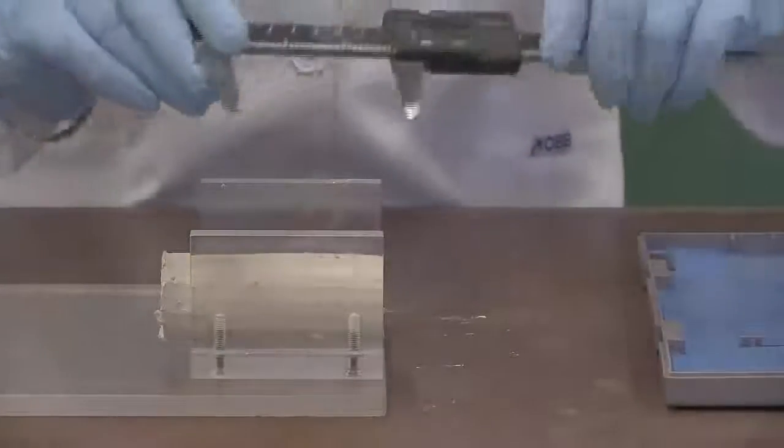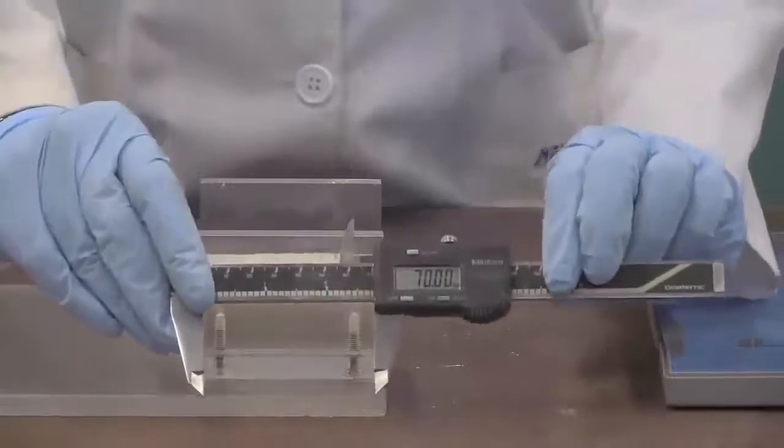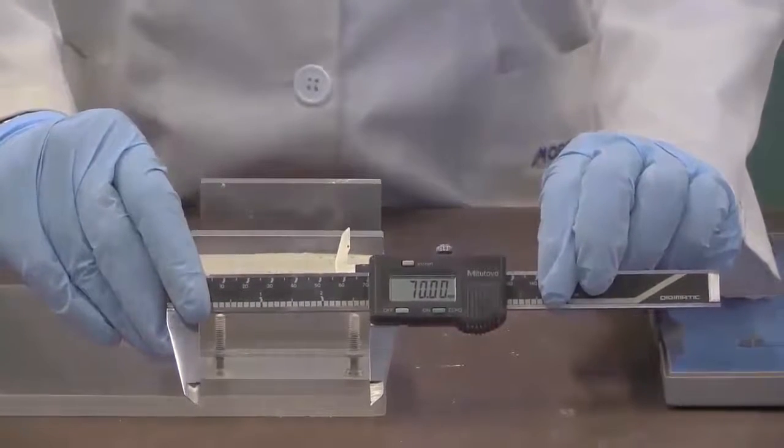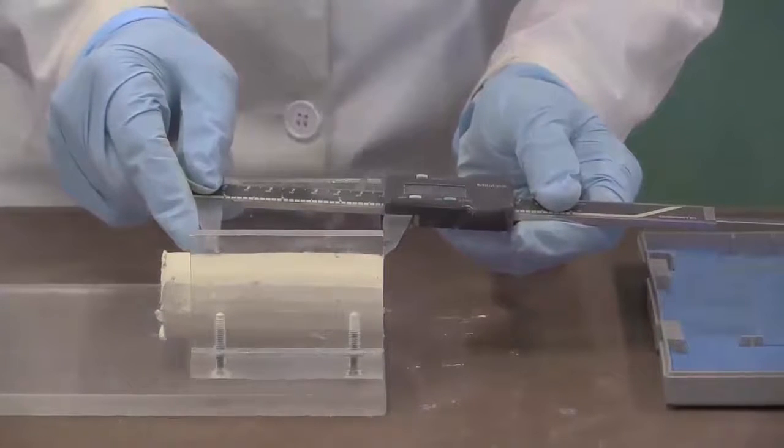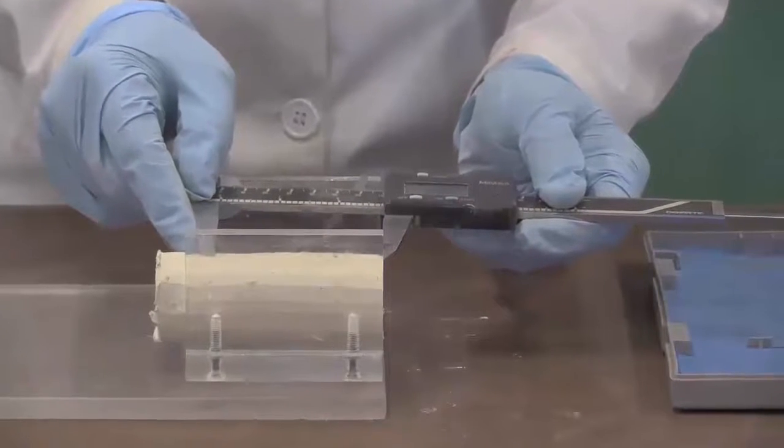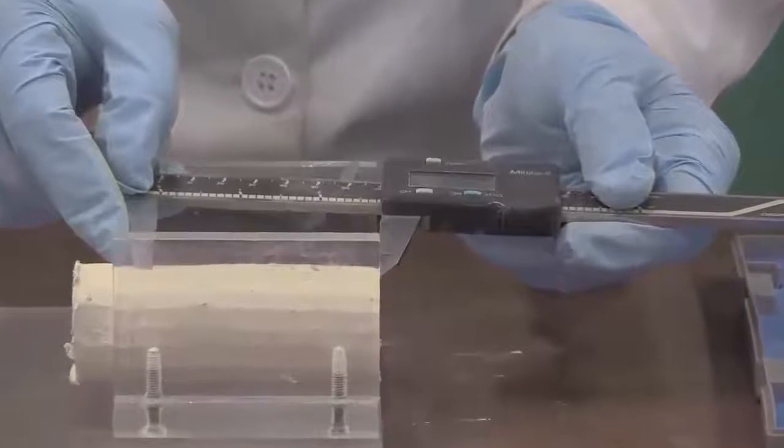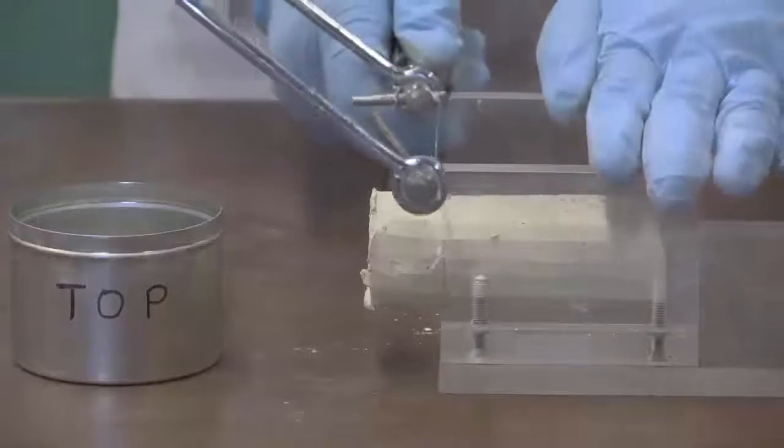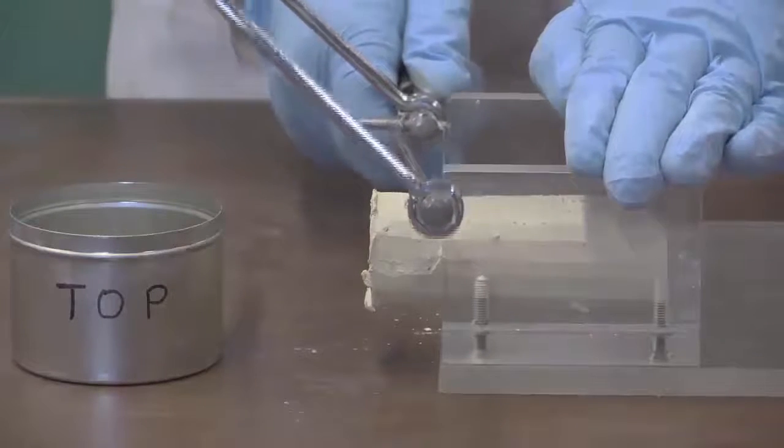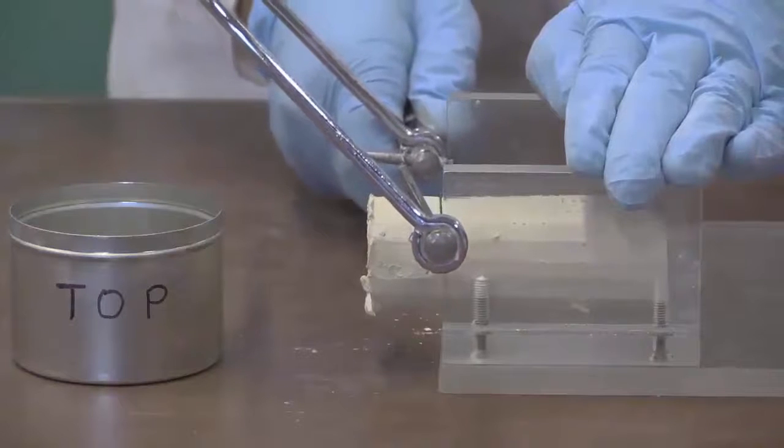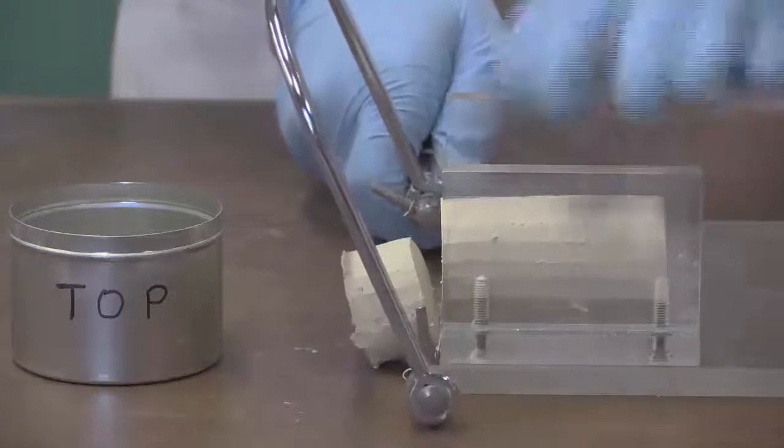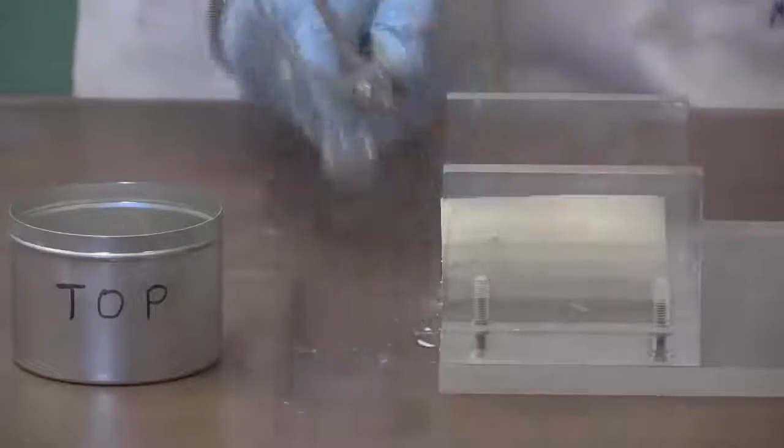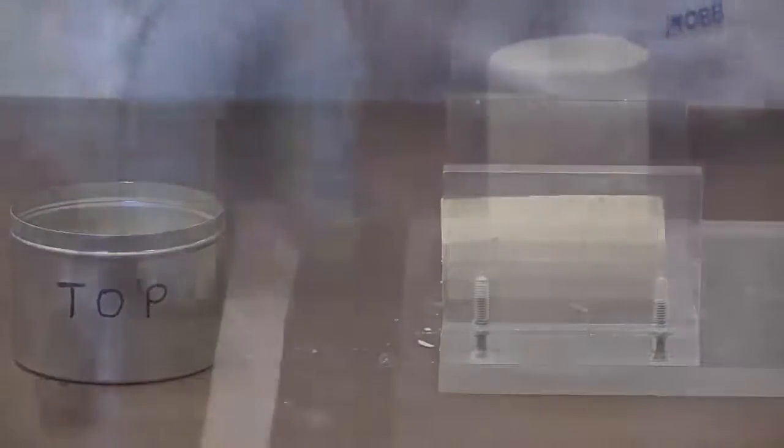Use the vernier calipers to place a mark on the specimen corresponding to a length of 70mm. Make the final trim at that mark to produce a specimen. Place the top trimmings into the third metal container for the determination of moisture content.